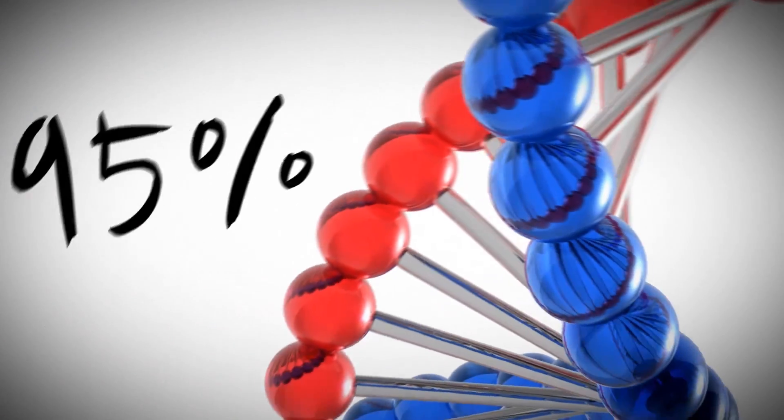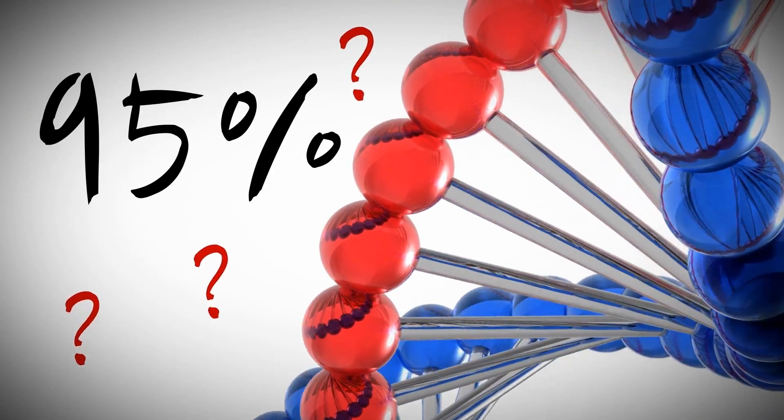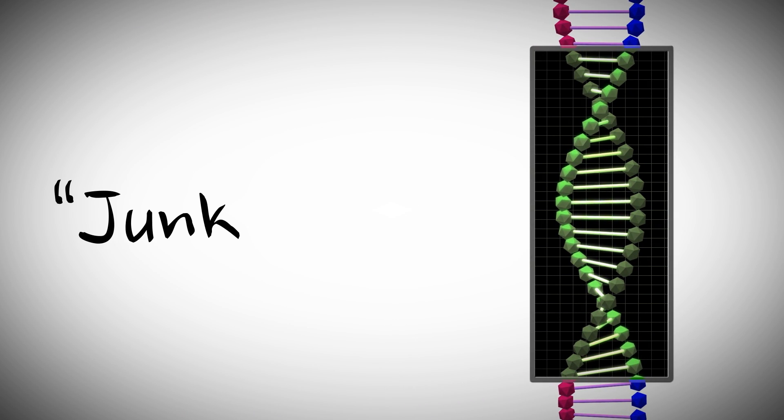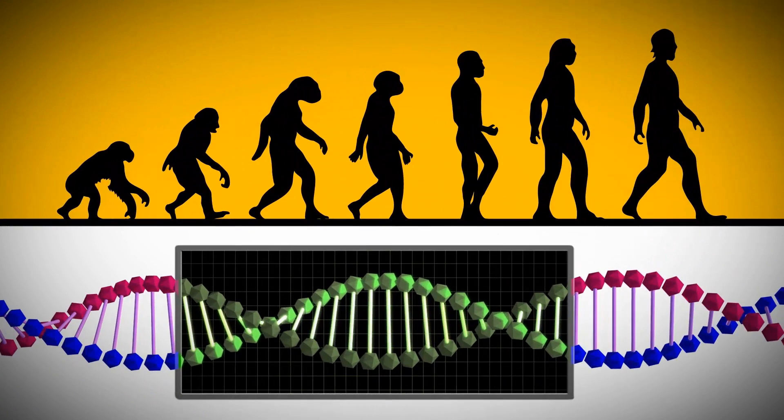but they couldn't figure out the other 95%. They quickly assumed it had no purpose. They labeled these unknown regions junk DNA and claimed them as evidence for evolution.